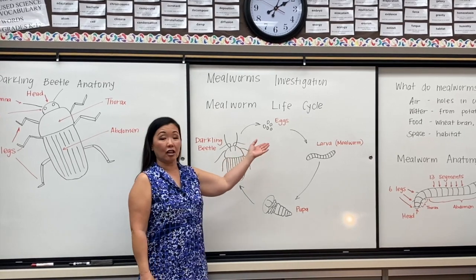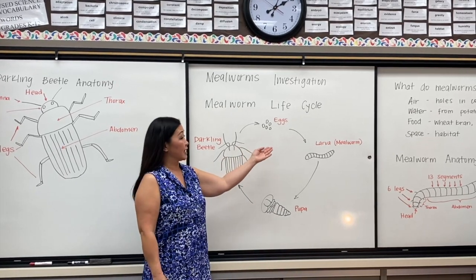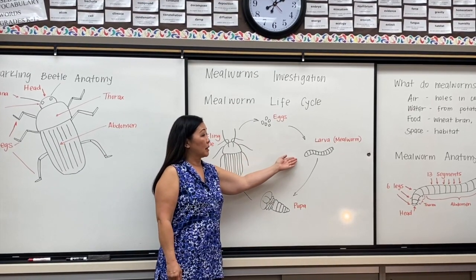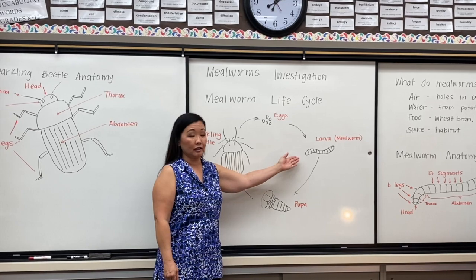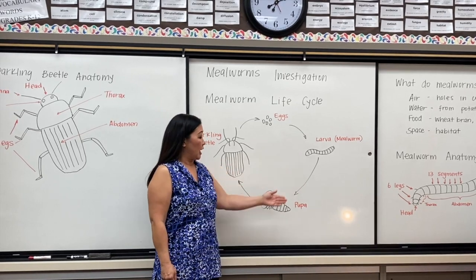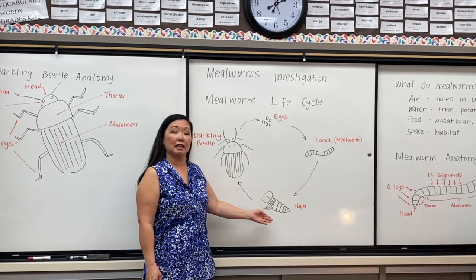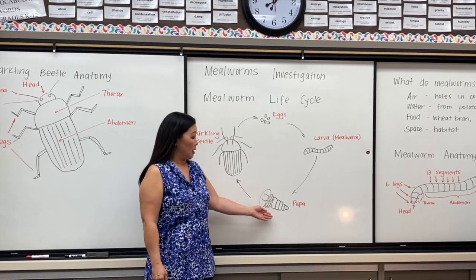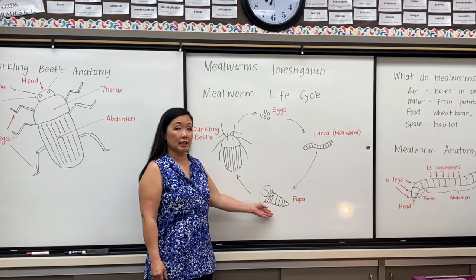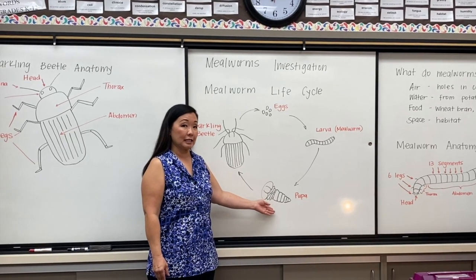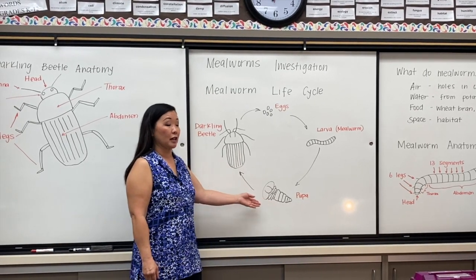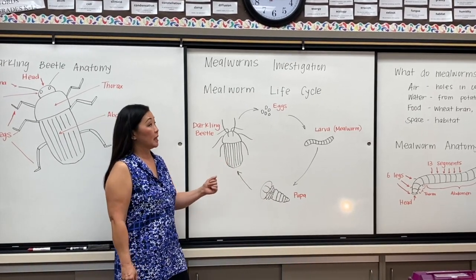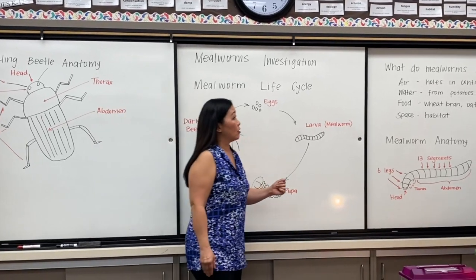They start off as eggs, and they become mealworms, which is the larval stage, and then they become a pupa, which is the metamorphosis into the darkling beetle.